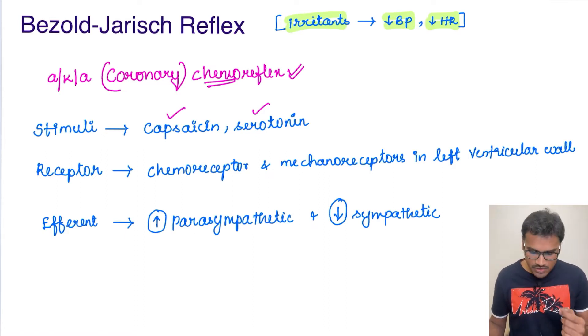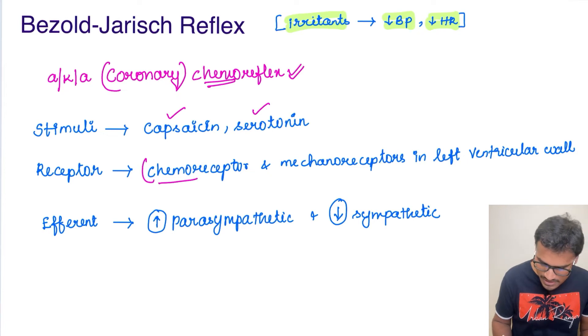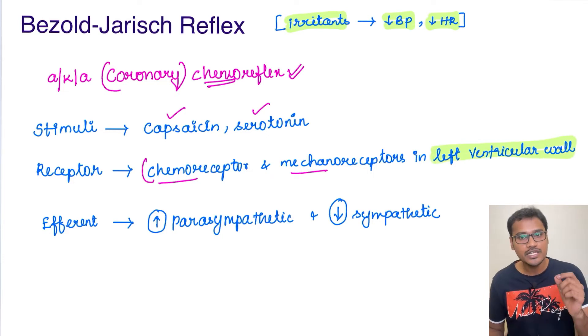It was activating certain receptors, that is the chemoreceptors as well as the mechanoreceptors in the left ventricular wall. Please pay attention here: the Bainbridge reflex is due to the atrial stretch receptors in the right atrium.